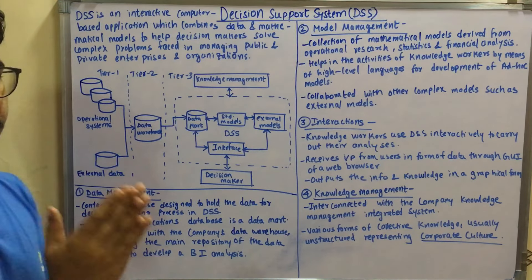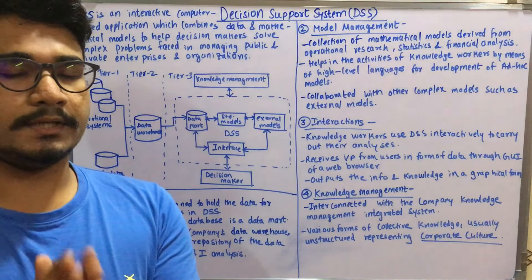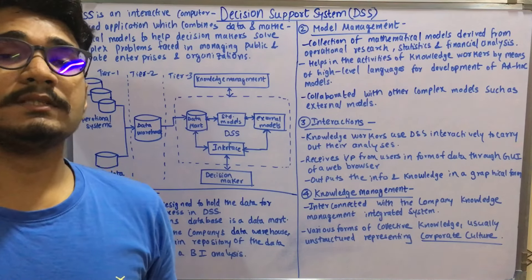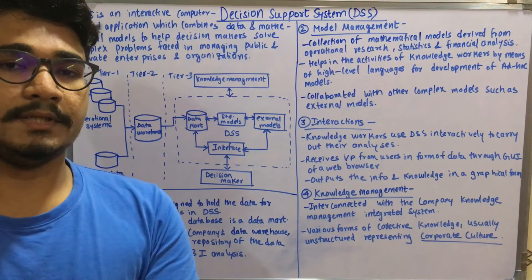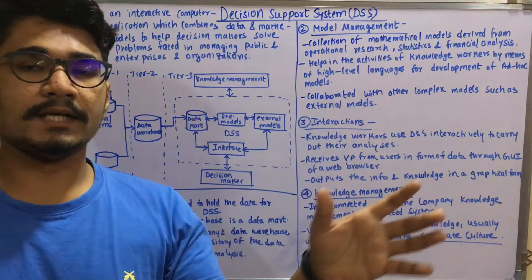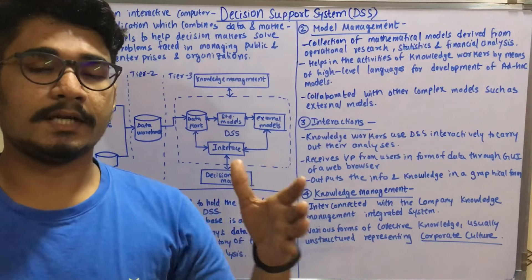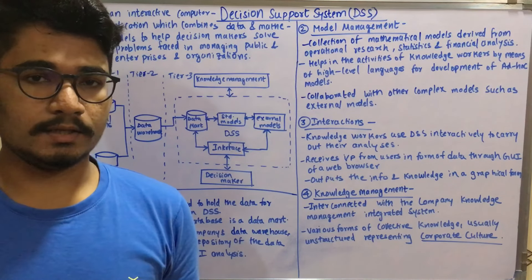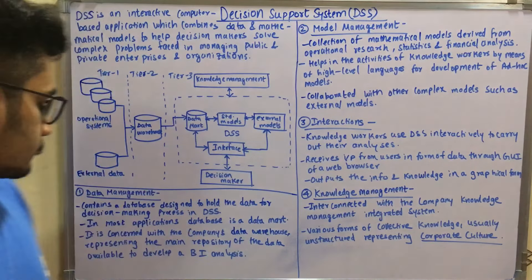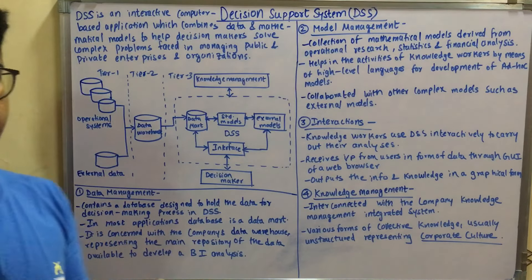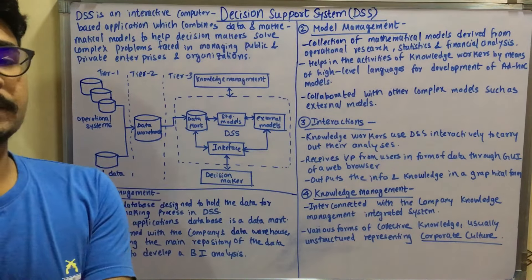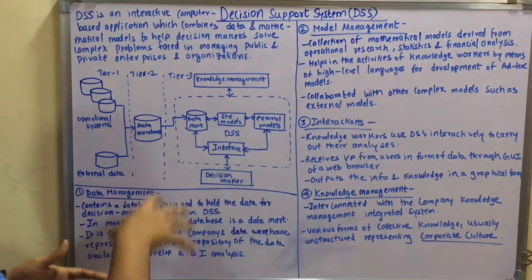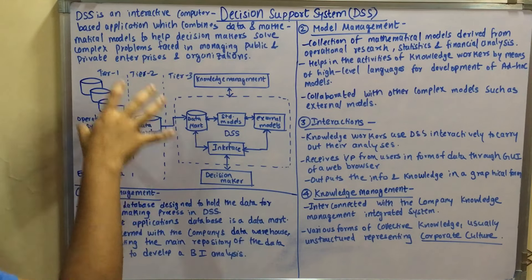There are four major components in DSS. First is data management — it's essentially a database used for complex decision making in organizations or enterprises. These databases are in most applications called the data mart, where all the data is arranged in a particular fashion so you can easily retrieve and use it for decision making. It is also connected to the company's data warehouse, since it is used for the company's complex decision making activities.